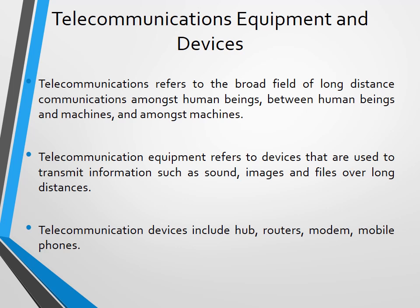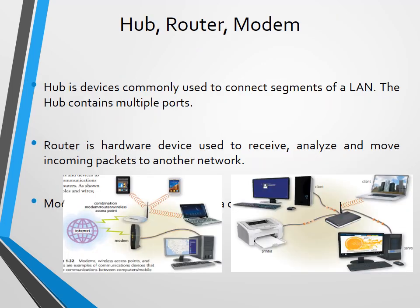Telecommunication devices include hubs, switches, routers, modems, and mobile phones. A hub is a device used to form a local area network — a very small network — and is commonly used to connect segments of a local area network through multiple ports where computers and other devices such as printers can be connected. A router is a more advanced hardware device used to receive, analyze, and move data packages across a network. It is much more than a hub because it can connect different networks, and one network can have several switches.